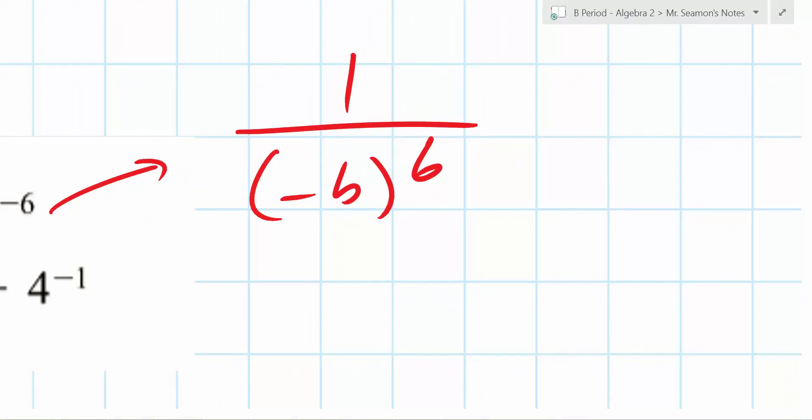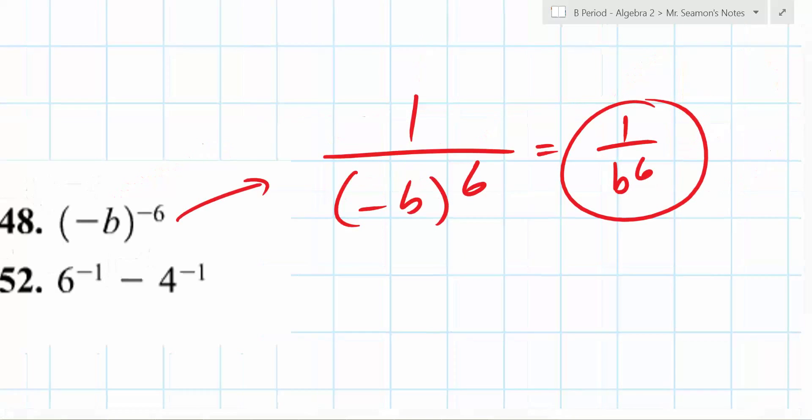Okay, but you could do one more thing with this. It's an even power. What happens if you multiply a negative number times itself an even number of times? Yeah, so that this is going to be 1 over just b to the 6th. So that wouldn't be 0. That's correct. That is correct right there. Because it's an even number of powers.